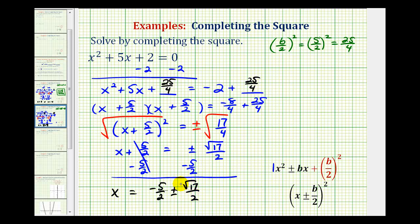We also need to recognize that √17 does not simplify, so we have two real irrational solutions.